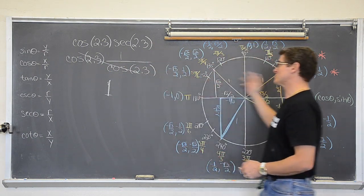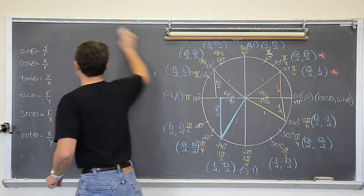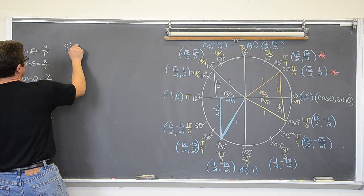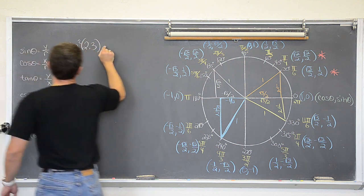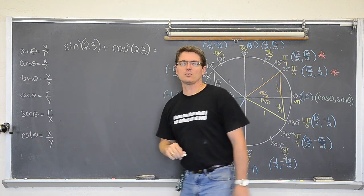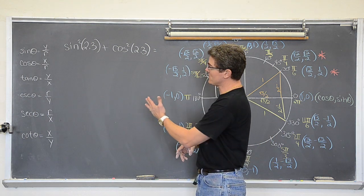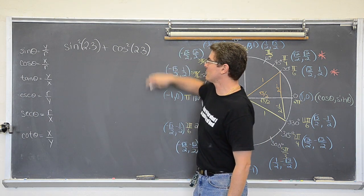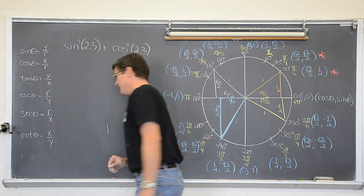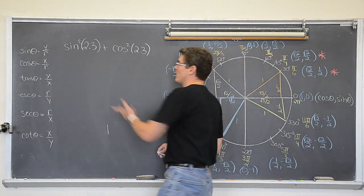So even though we have an angle that is not on the unit circle, we can still evaluate that expression. Keeping the same angle of 2.3, if I said the sine squared of 2.3 plus the cosine squared of 2.3 — what is that equal to? Well, this is one of the Pythagorean identities. Sine squared plus cosine squared — our first Pythagorean identity says that is equal to one.